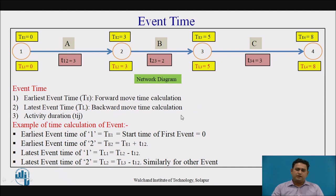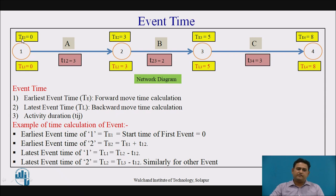Now let's start with the event time. In this particular diagram, we are observing the yellow color boxes which represent the event times. The above and below values are both event times. The earliest event time is represented with capital TE. TE1 means it is the earliest event time of event 1. Similarly, for events 2, 3, and 4, we represent capital TE2, TE3, and TE4. In the below yellow color box, we represent capital TL1, which is the latest event time. It is the backward moving time calculation, and the earliest event time is the forward moving time calculation.